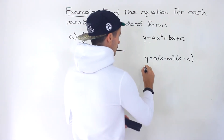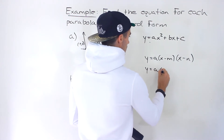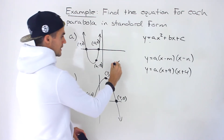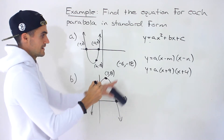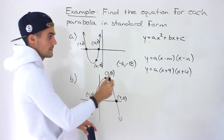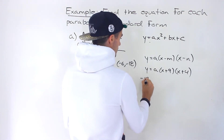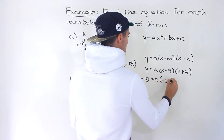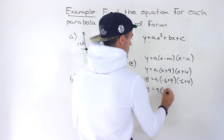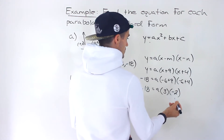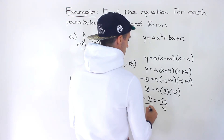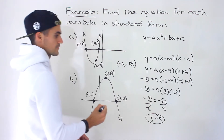We plug in the factors and also notice we're given the point negative 6, negative 18. So we plug in negative 18 for y and negative 6 for all the x's. We have the a value to solve for: negative 18 equals a times (negative 6 plus 9) times (negative 6 plus 4), which gives us negative 18 equals a times 3 times negative 2, so negative 6a. Dividing both sides by negative 6, the a value is 3.